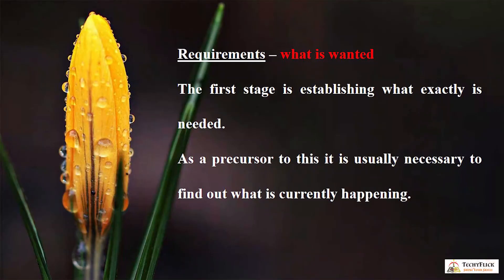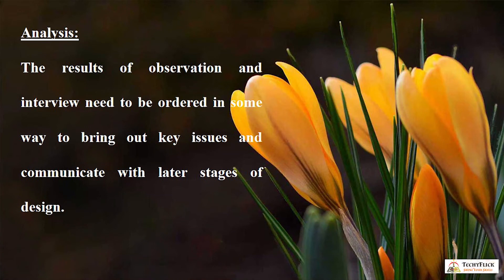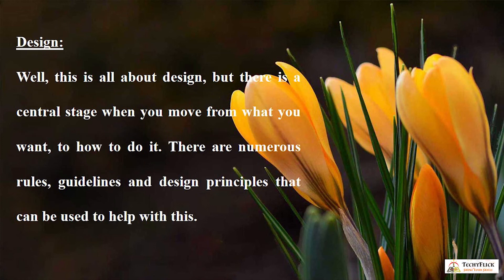Requirements: what is wanted? The first stage is establishing what exactly is needed. As a precursor to this, it is usually necessary to find out what is currently happening. Analysis: the result of observation and interview need to be ordered in some way to bring out key issues and communicate the later stages of design. Design: this is all about design, but there is a central stage when you move from what you want to how to do it.